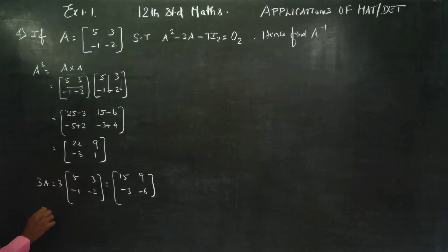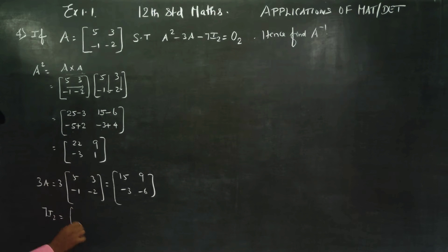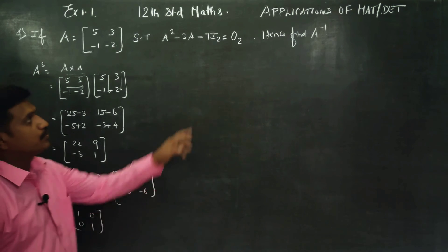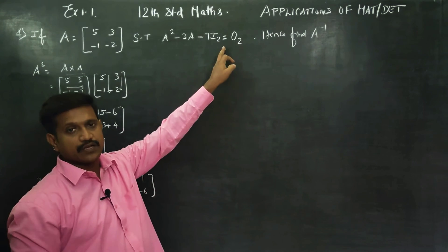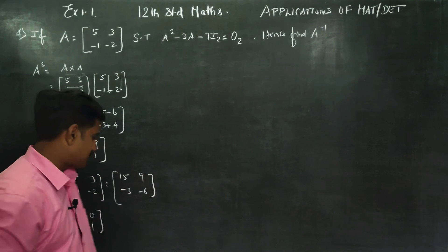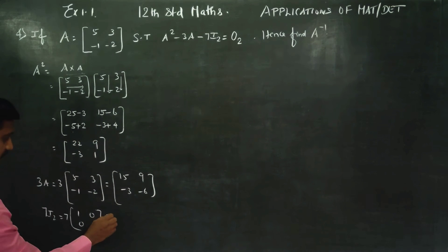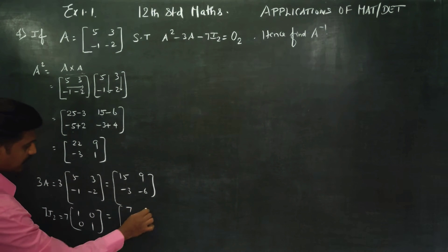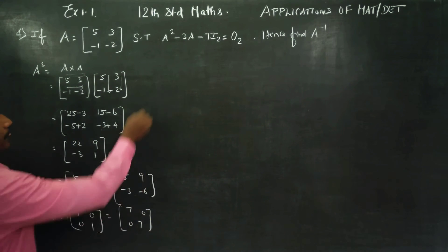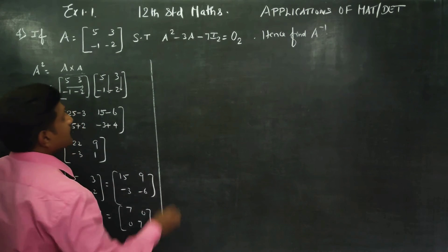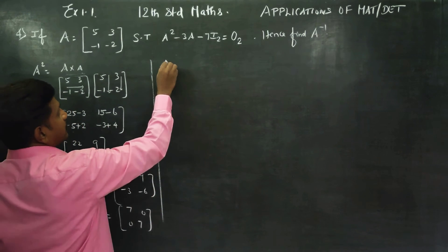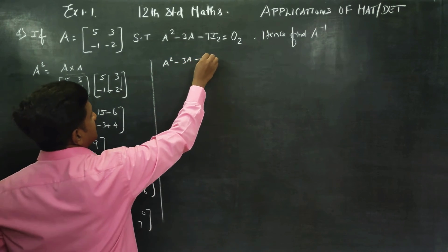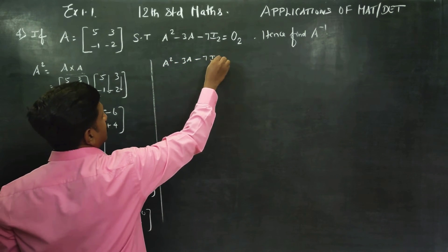Then you have to find 7I₂. 7I₂ means 7 into [1, 0; 0, 1], which is the 2×2 unit matrix, giving [7, 0; 0, 7].